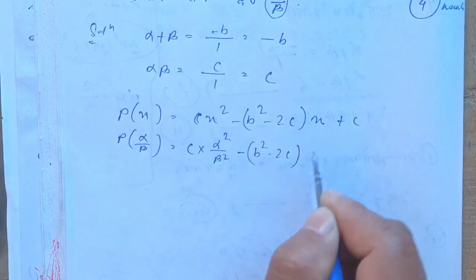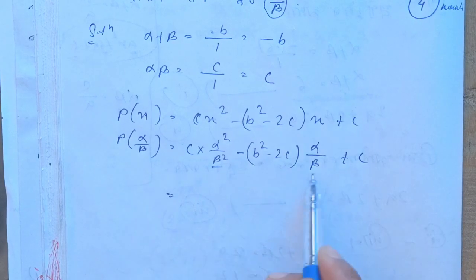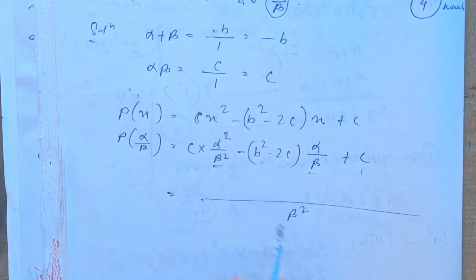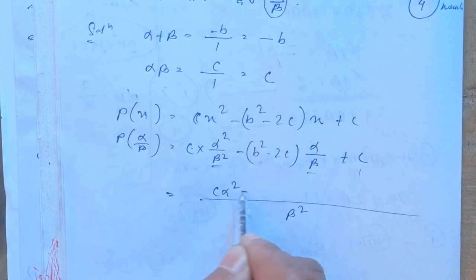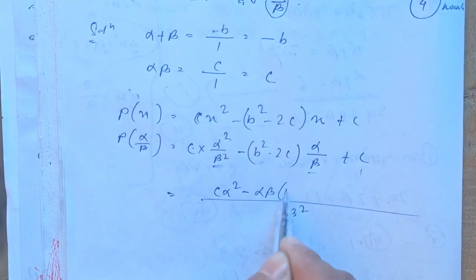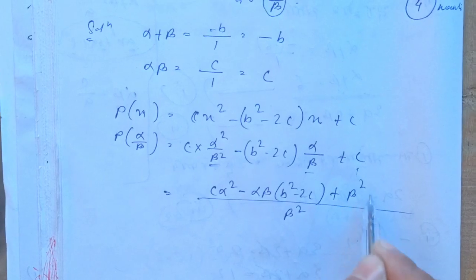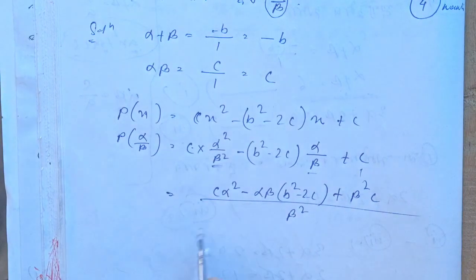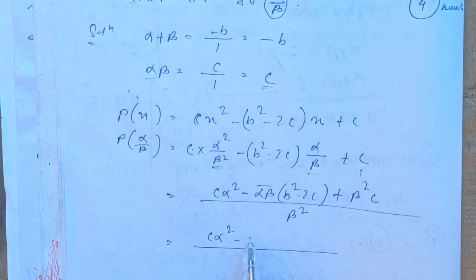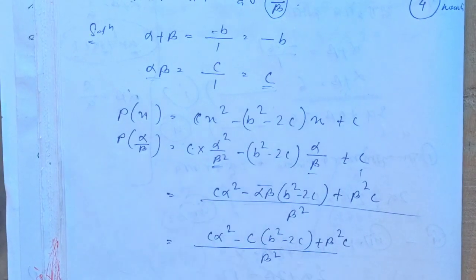Then we get: x squared minus 2c is equal to alpha by beta plus c. We are working with omega minus beta squared C, alpha squared minus — we delete that — alpha beta, B squared minus 2c, plus — we delete that — beta squared, c. So: c alpha squared minus alpha beta, c b squared minus 2c, beta squared by c, by beta squared.